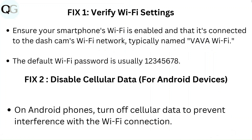Fix 1: Verify Wi-Fi settings. Ensure your smartphone's Wi-Fi is enabled and that it's connected to the dashcam Wi-Fi network, typically named Wawa Wi-Fi. The default Wi-Fi password is usually 12345678.